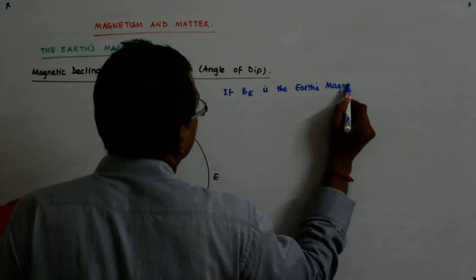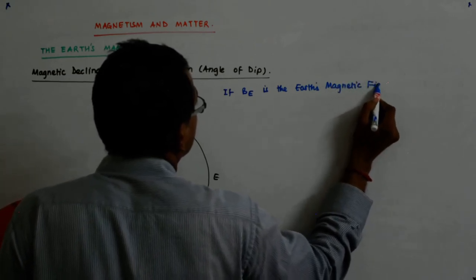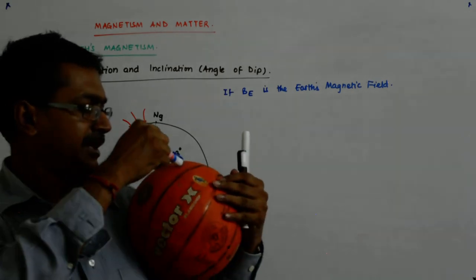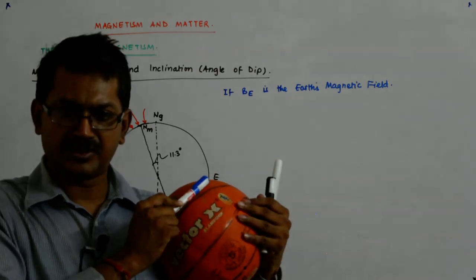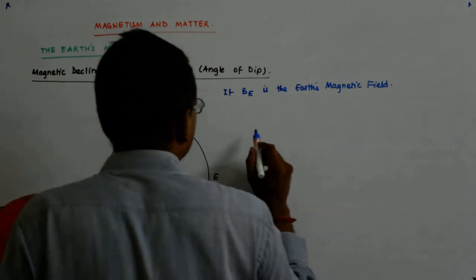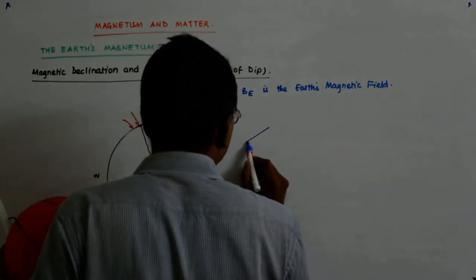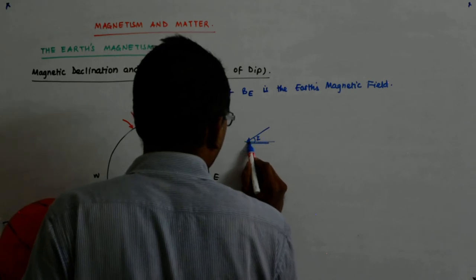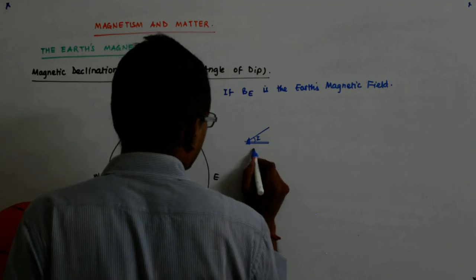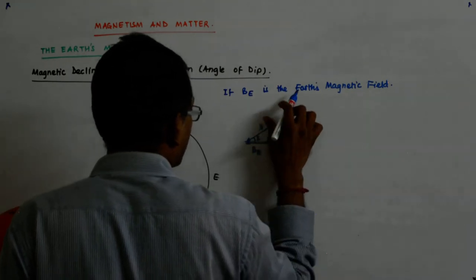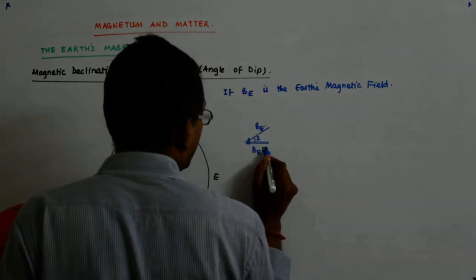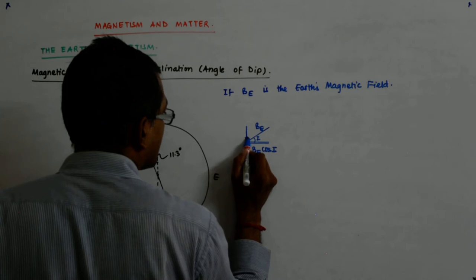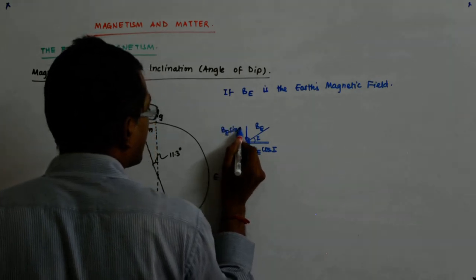If Be is the Earth's magnetic field, then Be cos I will be this component - the horizontal component. It's like this, and this is the horizontal. This makes an angle I with this. If I take this, this is Be, so Be cos I is this, and this is Be sin I.